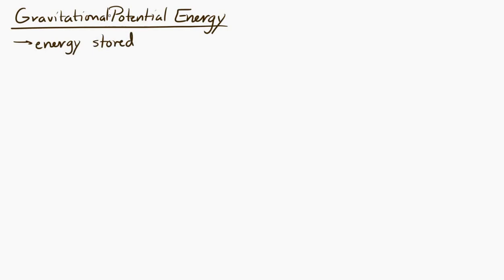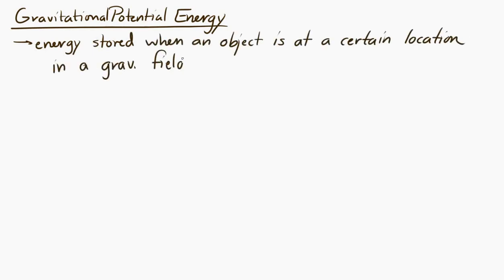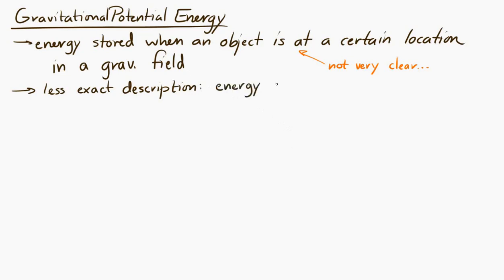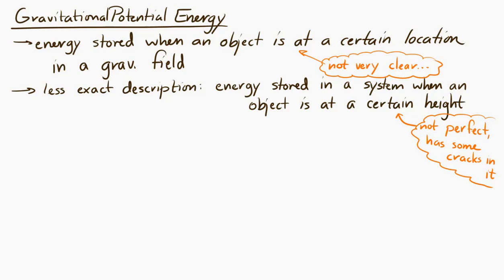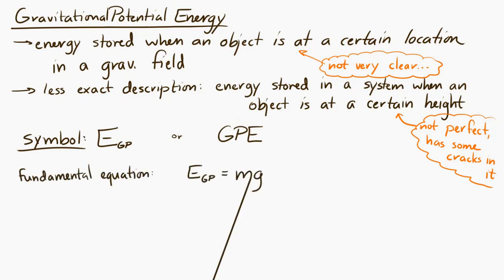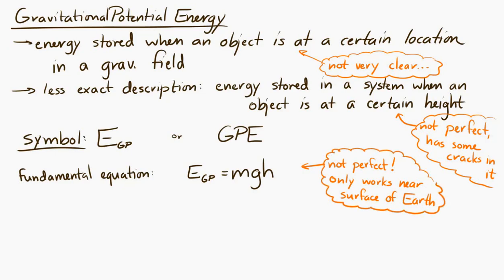Now let's take a look at gravitational potential energy. This is the energy stored when an object is at a certain location in a gravitational field — or, in a less exact but more useful way, the energy stored in a system when an object is at a certain height. Gravitational potential energy can be represented with the symbol EGP, or sometimes GPE. The equation is: gravitational potential energy equals mgh. This equation only works near the surface of the Earth. m is the mass of the object, and g is the magnitude of the acceleration due to gravity — 9.8 meters per second squared, without direction.